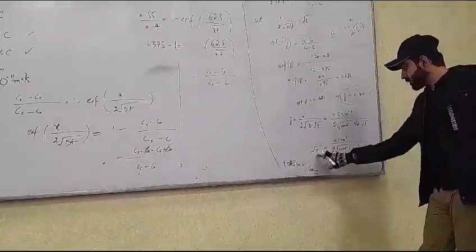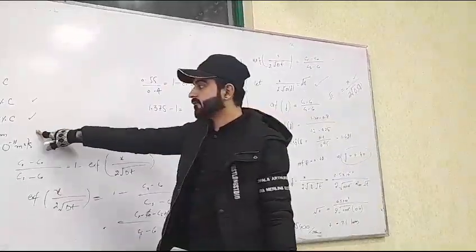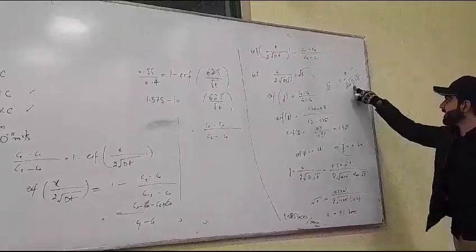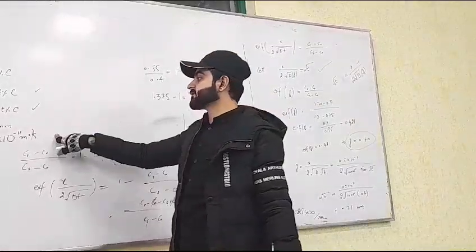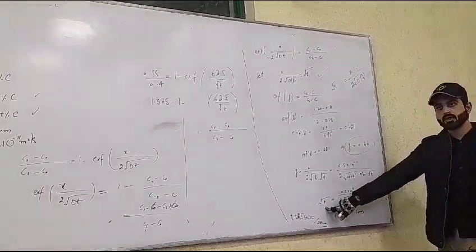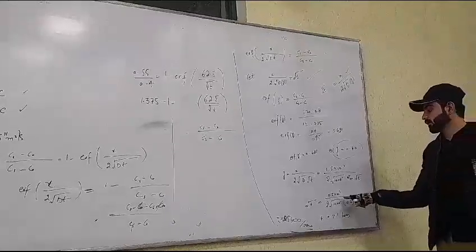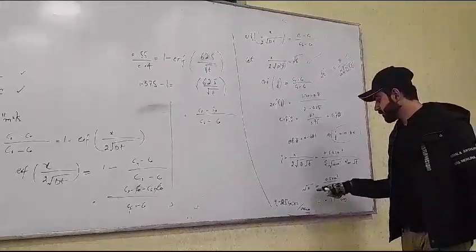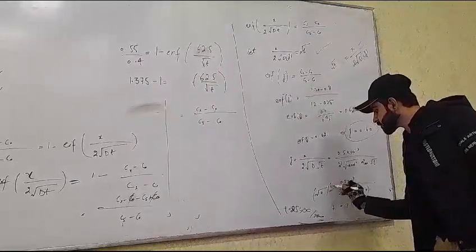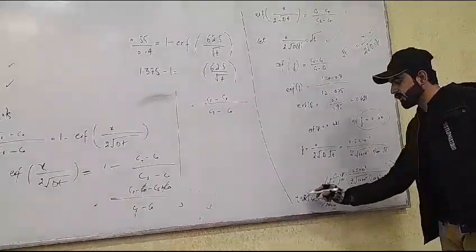So the formula becomes √t = x / (2 · √D · z). With x = 0.5 × 10⁻³ m, D = 1.6 × 10⁻¹¹ m²/s, and z = 0.40, we compute √t. Then squaring both sides gives the value of t in seconds.